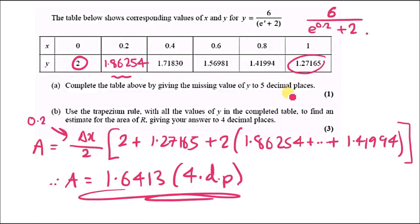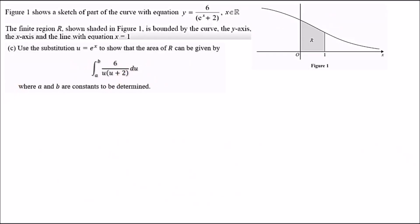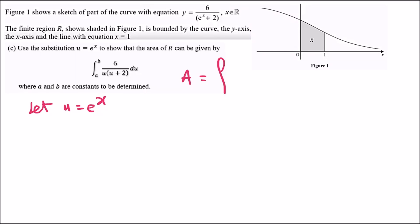That's how to handle the Trapezium Rule. Moving on: Figure 1 shows a sketch of part of the curve with the given equation. We've already evaluated the area R using the Trapezium Rule. Now use the substitution u = e to the power x to show that the area of R can be written in a new form. The area of R is the integral from 0 to 1 of 6 over e^x plus 2 dx.